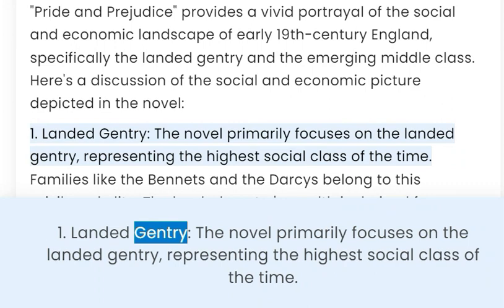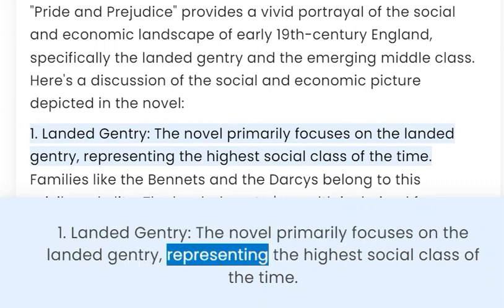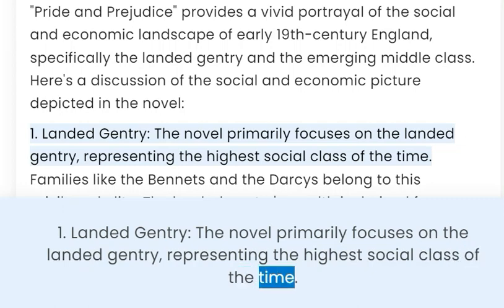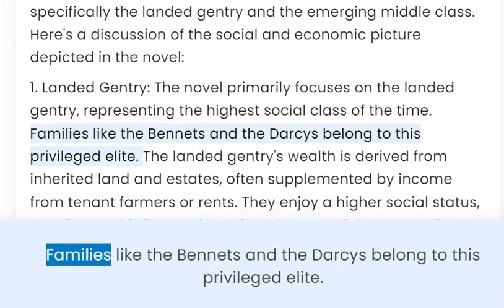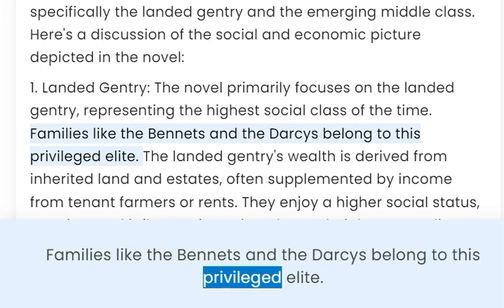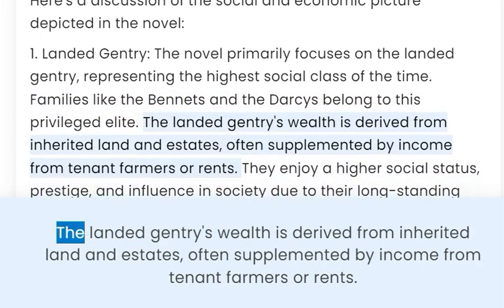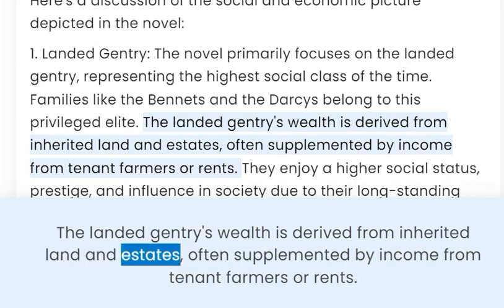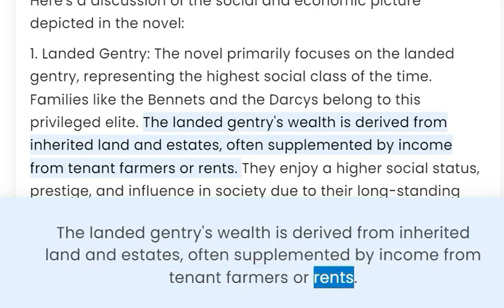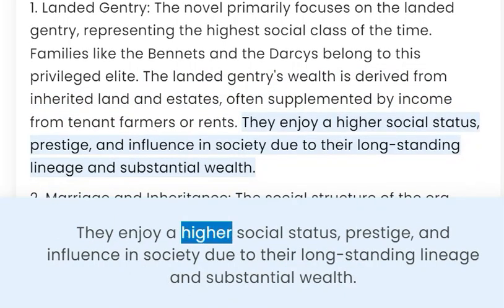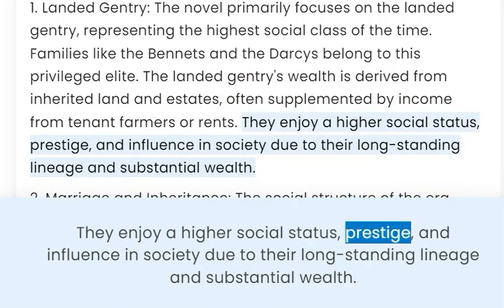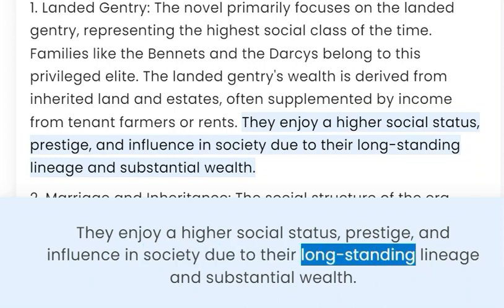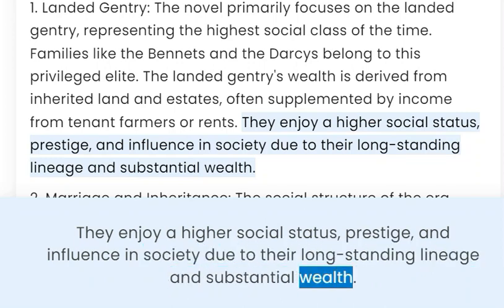1. Landed Gentry. The novel primarily focuses on the landed gentry, representing the highest social class of the time. Families like the Bennets and the Darcys belong to this privileged elite. The landed gentry's wealth is derived from inherited land and estates, often supplemented by income from tenant farmers or rents. They enjoy higher social status, prestige, and influence in society due to their long-standing lineage and substantial wealth.